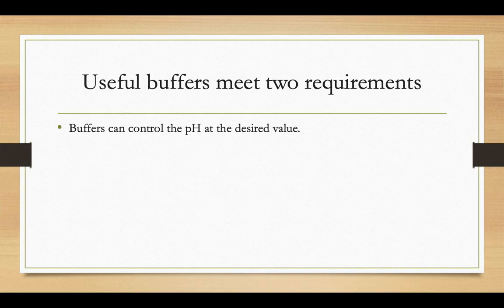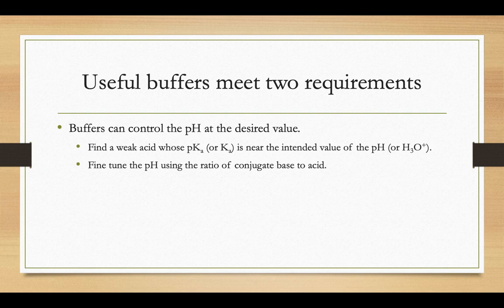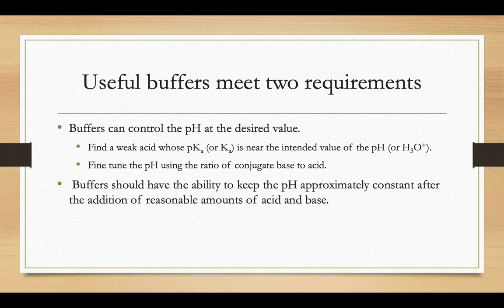Those useful buffers are going to meet two requirements. They have to be able to control the pH at a desired value. So that's why you're going to look, how we said before, why is it useful at this particular range? You're going to look for a pKa that is somewhere near the pH that you're aiming for. And then you can fine-tune that pH using your ratio of conjugate base to acid. Because it has both the acid and the base in there, it'll have the ability to keep the pH pretty constant.